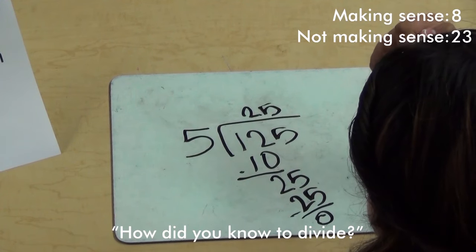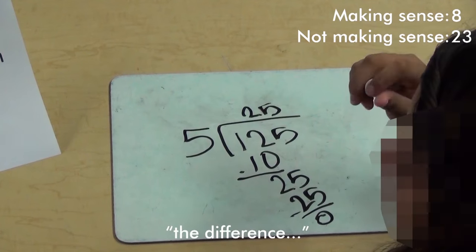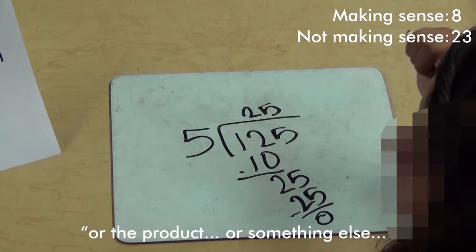Can you tell me, how did you know to divide? Because it doesn't say the difference, or it doesn't say the sum, or the product, or something.